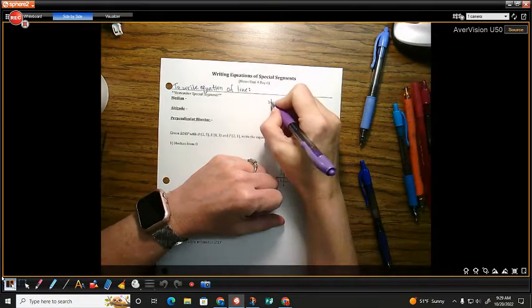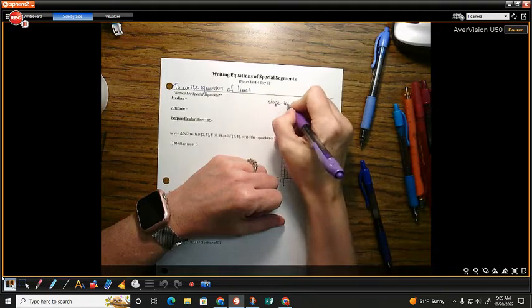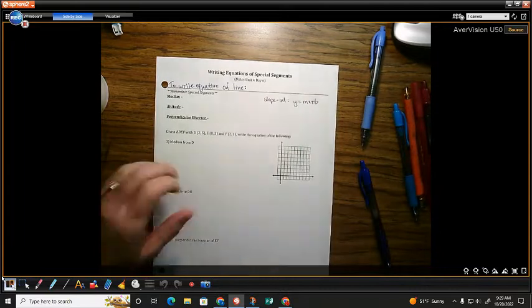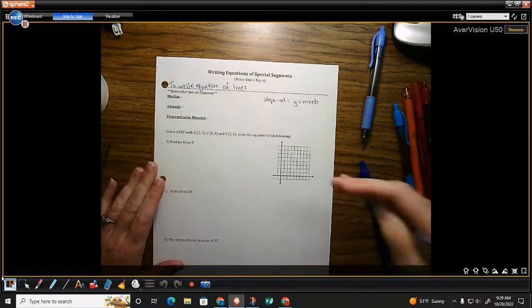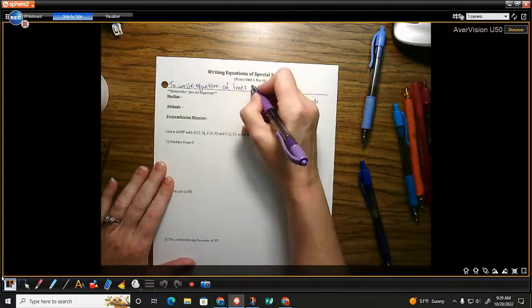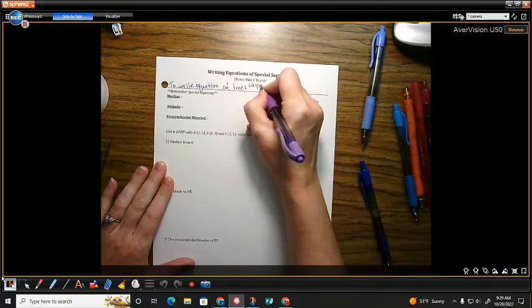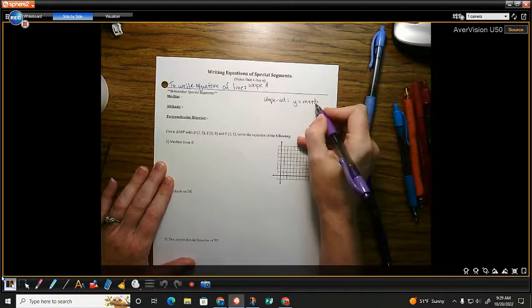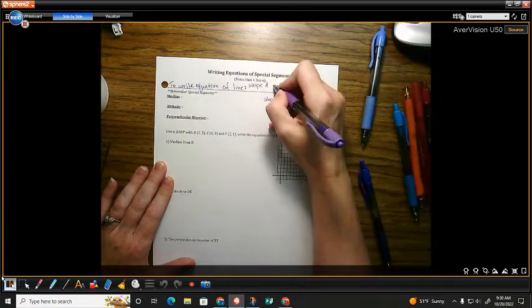Slope intercept. What's that guy look like? That's your y equals mx plus b. Now, it's got a y and an x, but what did you need to plug into it to make the equation be real? You need a slope. Slope and what? The intercept, which is a point, right? So you need a slope and a point.